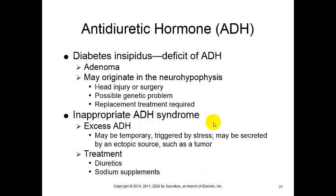Next on our list of integrative system hormones is anti-diuretic hormone. This hormone is primarily responsible for the reuptake of water from the kidneys so that we don't have excess urination. Without this anti-diuretic hormone we end up with a condition called diabetes insipidus - a deficiency of ADH so we have an excess amount of urine, typically caused by adenoma.